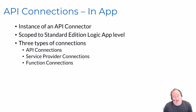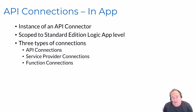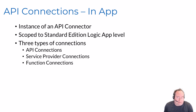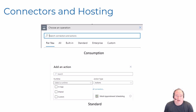Inside standard edition, there are three different types of connectors. We have API connections, which are Microsoft managed and show up in the Azure portal under API connections. We have service provider connections, which are our in-app connections that live at the standard edition logic app level. And we have function connections, which are connections to any Azure functions we're calling.